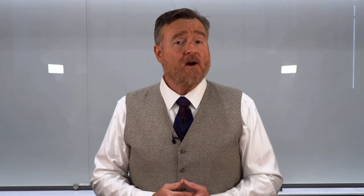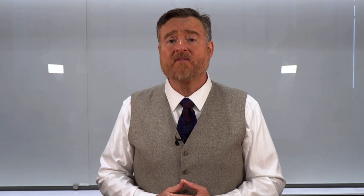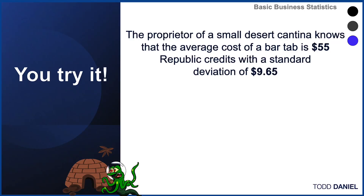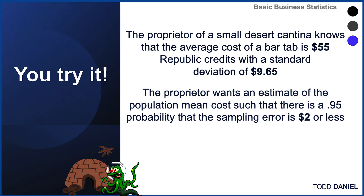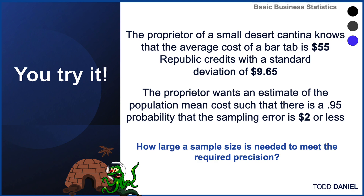Now let's apply this information with a few examples, starting with a story about the proprietor of a small desert cantina who knows that the average cost of a bar tab is 55 republic credits, with a standard deviation of 9.65 credits. This proprietor wants an estimate of the population mean cost such that there is a 95% probability that the sampling error is 2 credits or less. How large of a sample size is needed to meet this required precision?